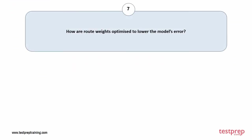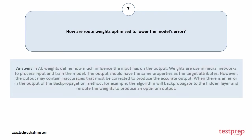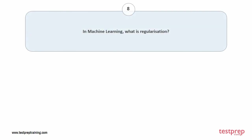Question number seven: how are weights optimized to lower the model's error? In AI, weights define how much influence the input has on the output. Weights are used in neural networks to process input and train the model. When there is an error in the output, the backpropagation algorithm will back-propagate to the hidden layer and reroute the weights to produce an optimum output.